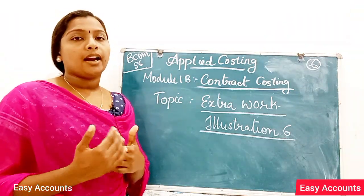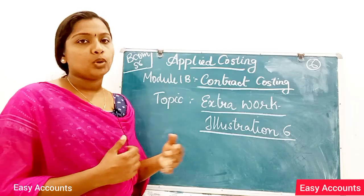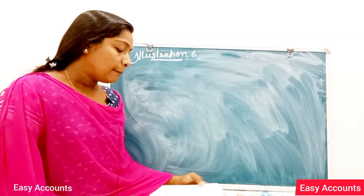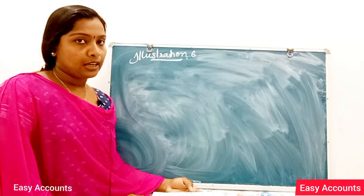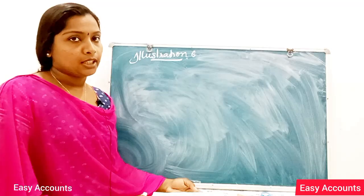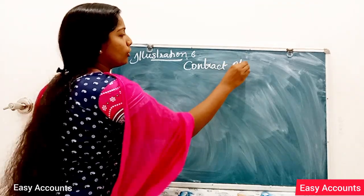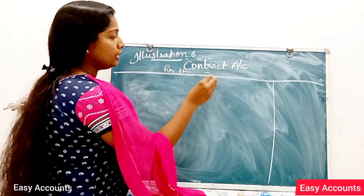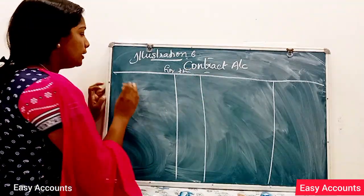What I am going to do is we have to do Illustration 6. This is going to be a contract account. We have a contract account for the year ending December 31st, 2014. Now what are the last few things and the first expenses?